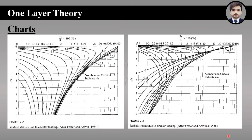These are some charts developed by Foster and Alvin in 1954. These charts were developed for Poisson ratio 0.5. Figure 2.2 is used to find the vertical stresses due to circular loading, and figure 2.3 is used to find the radial stresses due to circular loading.